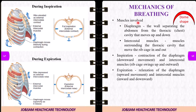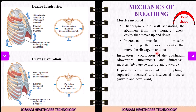In the breathing process, there are two muscles involved: the diaphragm and the intercostal muscles. The diaphragm separates the thoracic cavity from the abdomen and is a dome-shaped structure. The intercostal muscles are located in the ribcage and move it in and out.